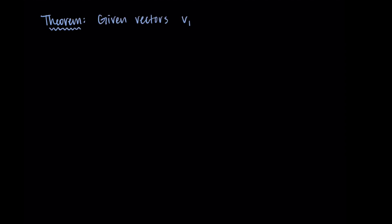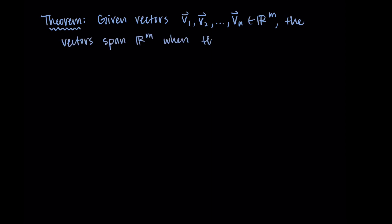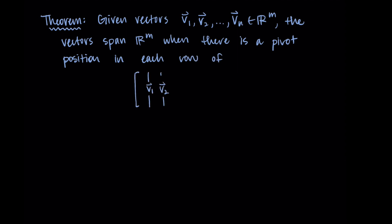This theorem was all about when we have n vectors in an n-dimensional space. But this gets slightly more complicated once we start thinking about n vectors in Rm, so when n and m are different. The corresponding theorem for that case says that given vectors v1 through vn in Rm — n vectors in an m-dimensional space — those vectors will span Rm when there is a pivot position in each row of the matrix made from the vectors as the columns.